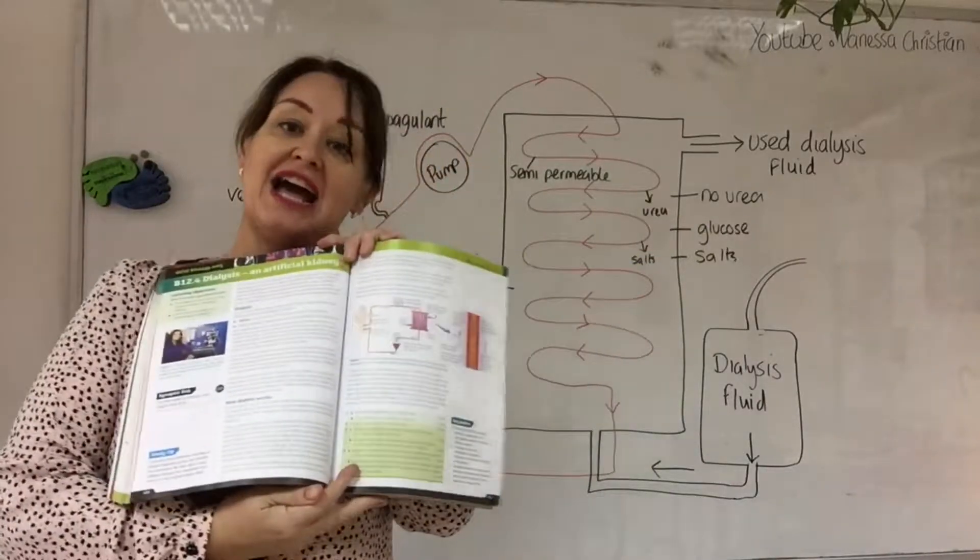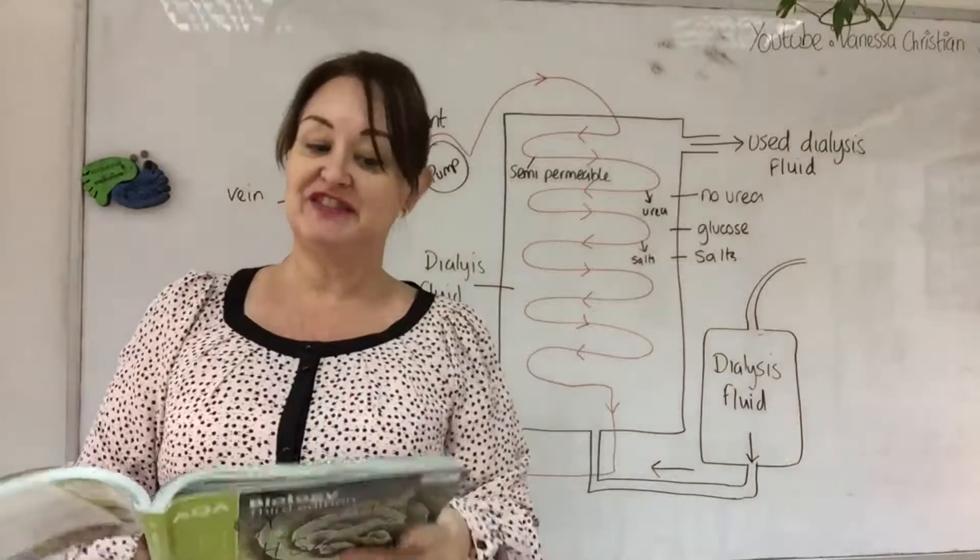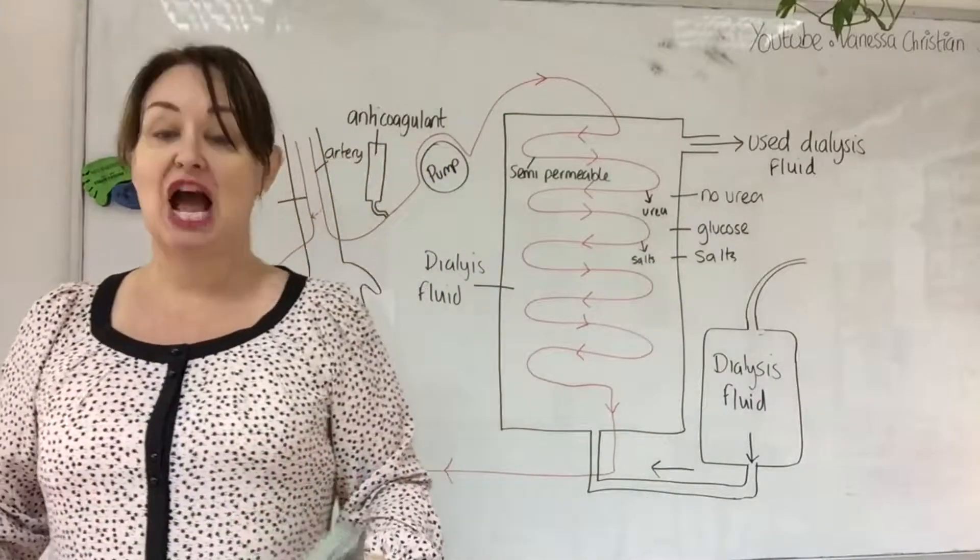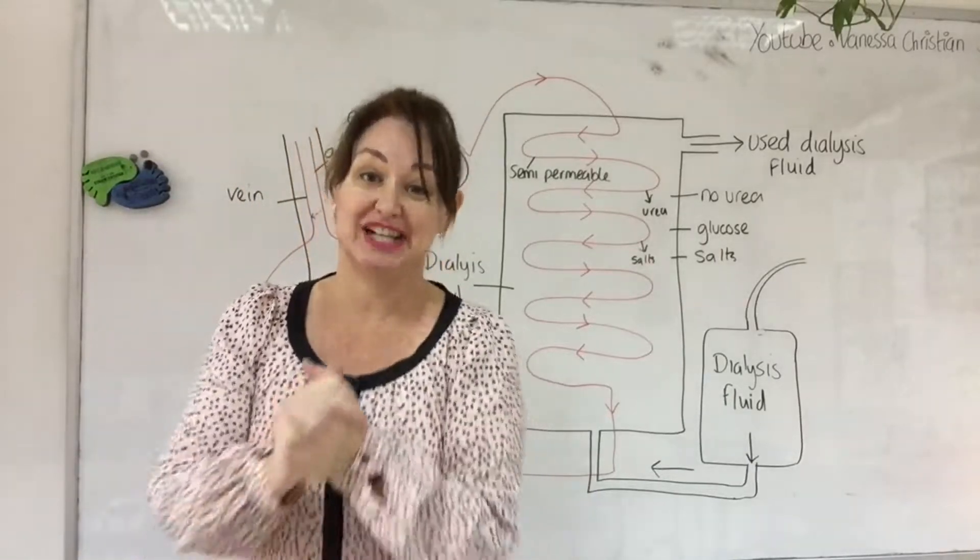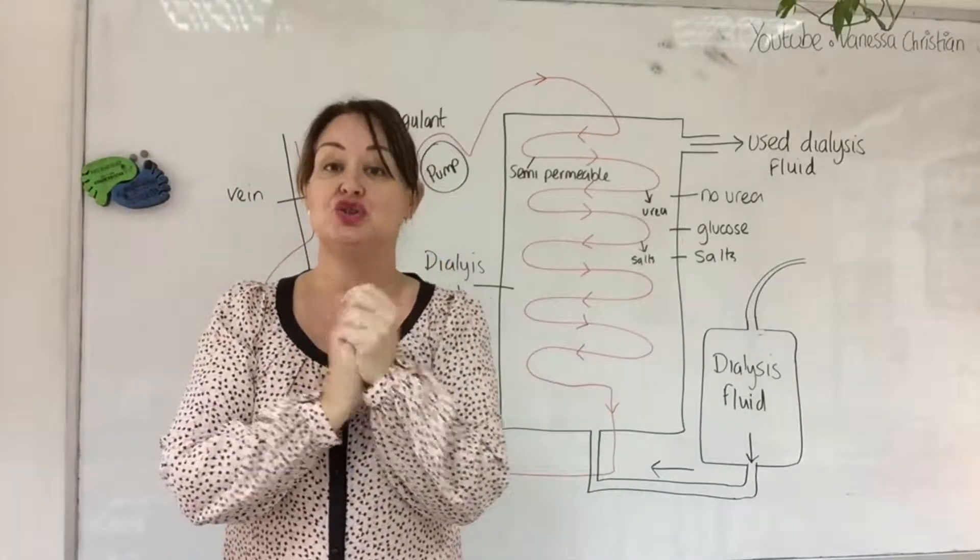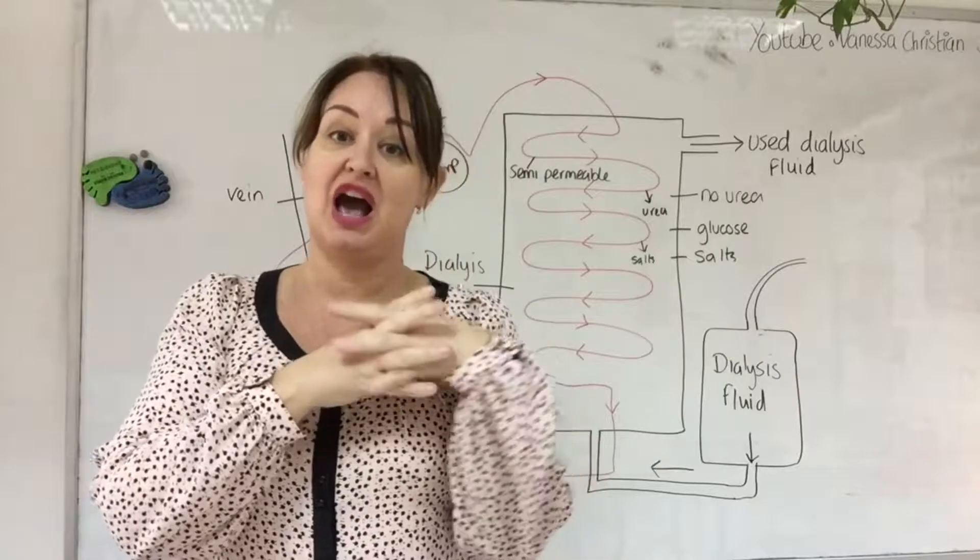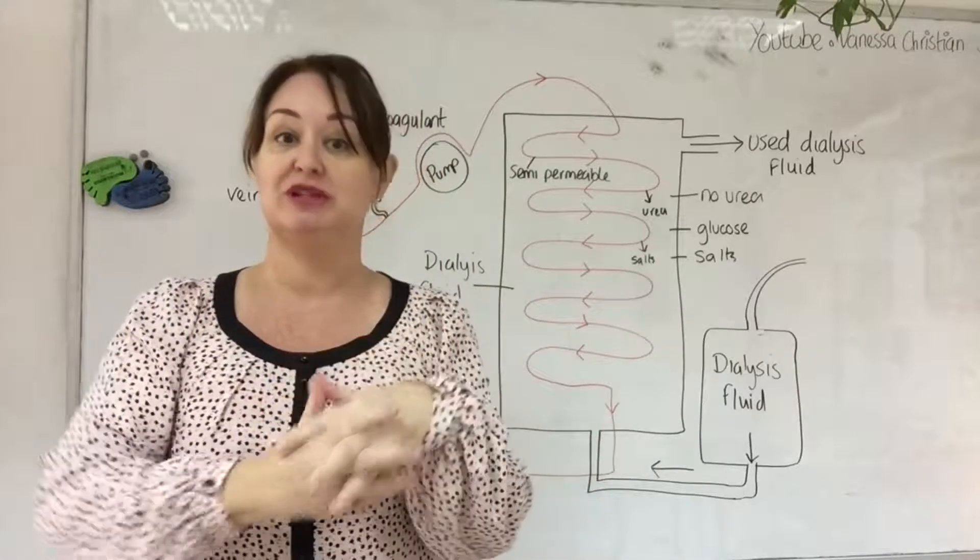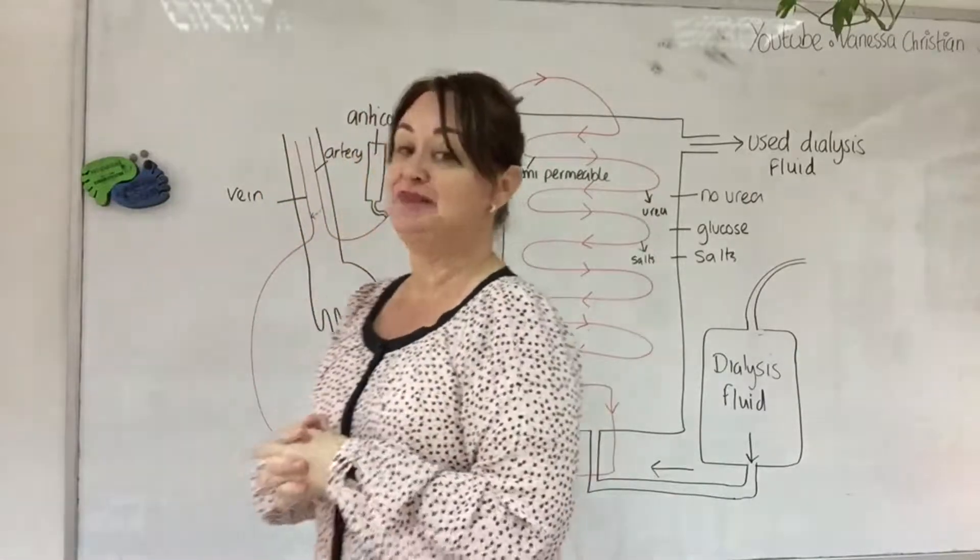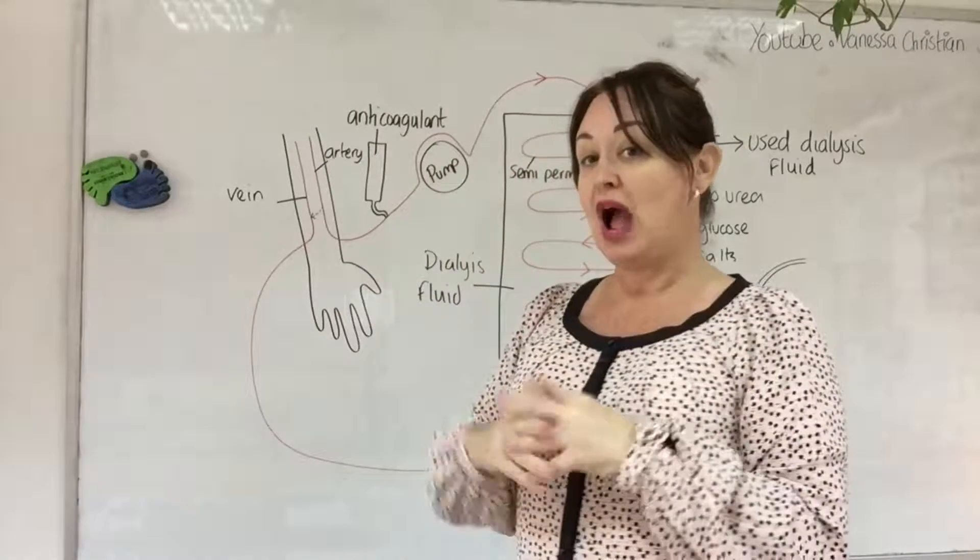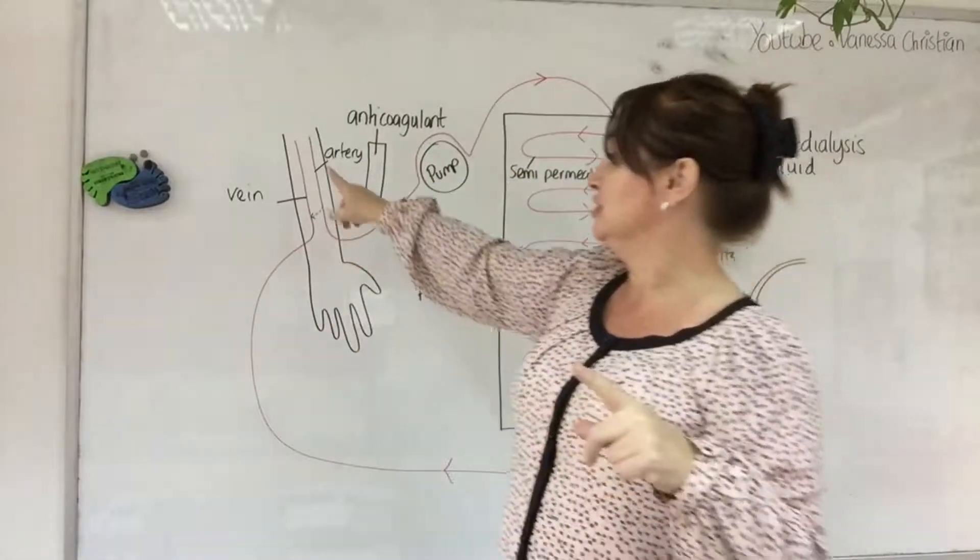We are looking at 12.4 and specifically dialysis and how it works. Dialysis is basically an artificial kidney and you may have to go on dialysis if you have kidney disease or kidney problems, a failing kidney. How it works is basically you're going to take blood from the artery.